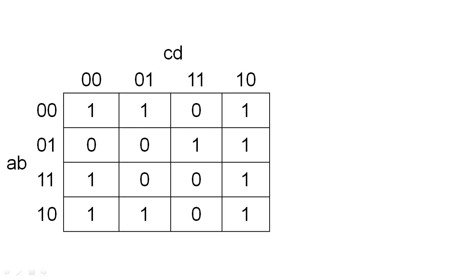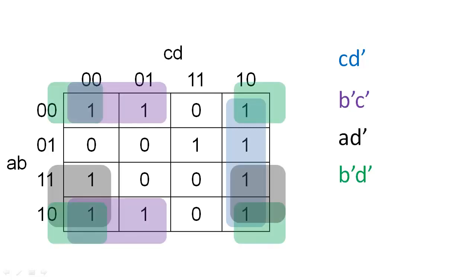First, we'll identify the five prime implicants. Some of the cells here are covered by only one prime implicant. These dotted prime implicants are essential because they are the only prime implicants that cover the dotted cells.